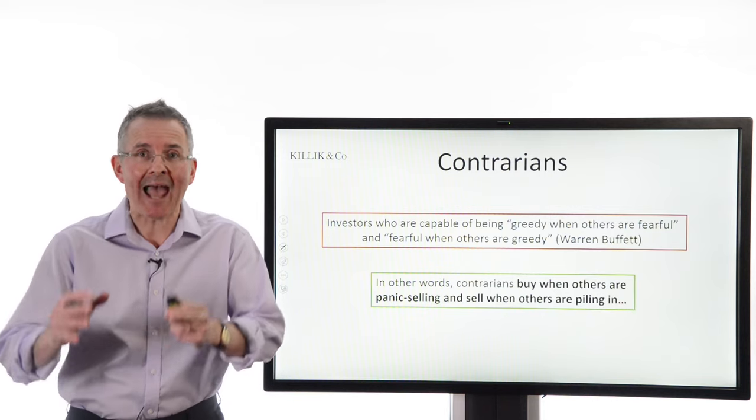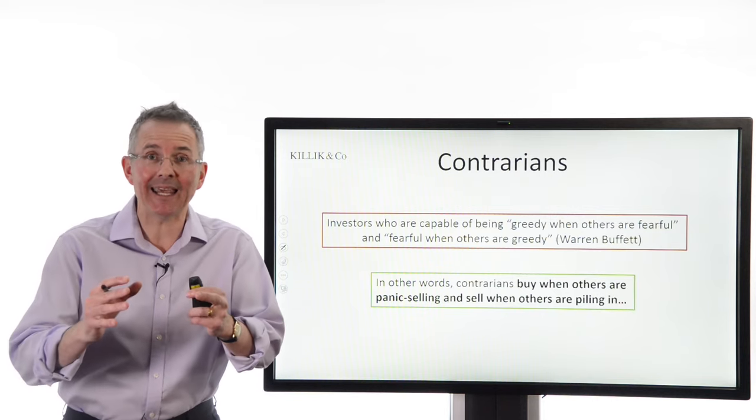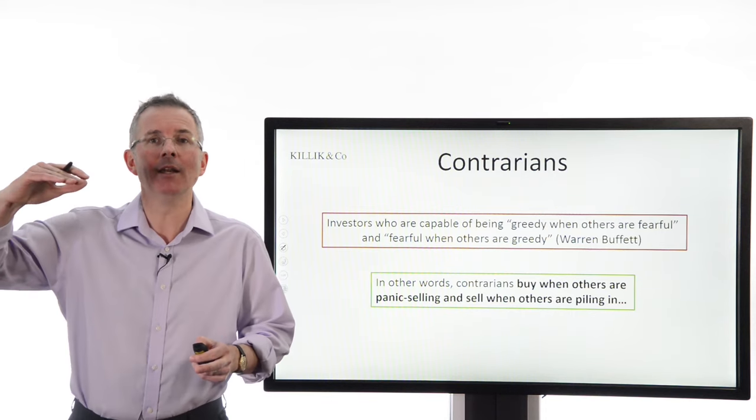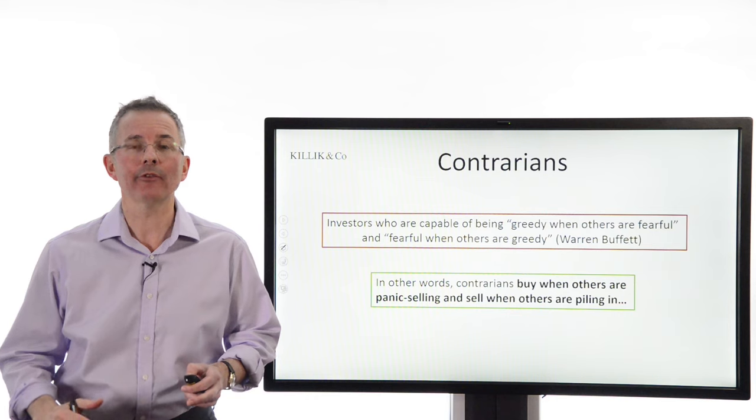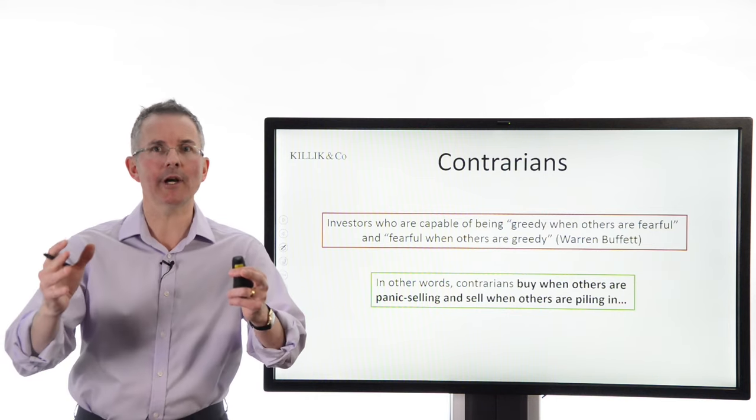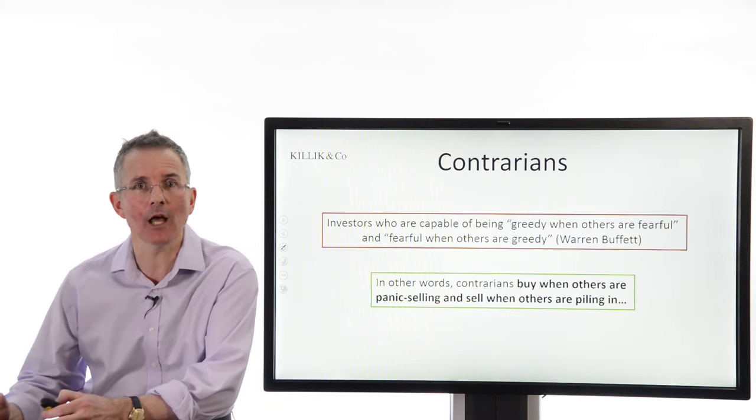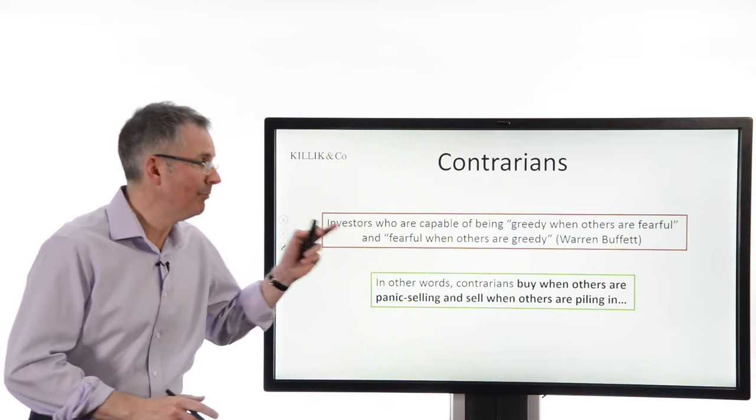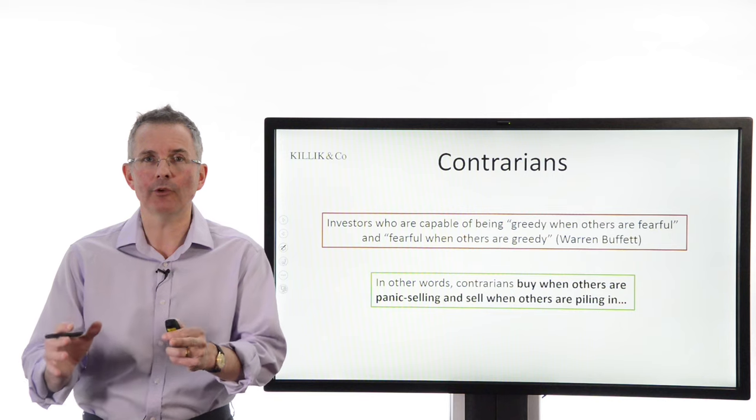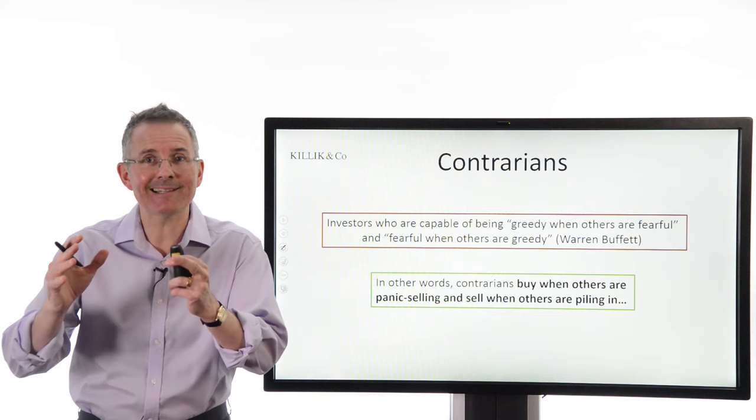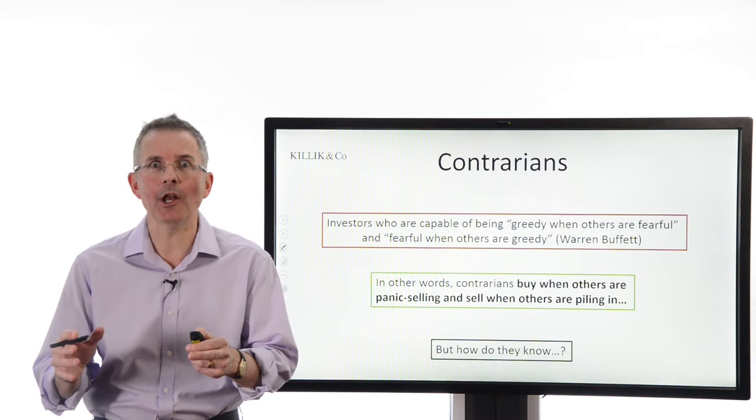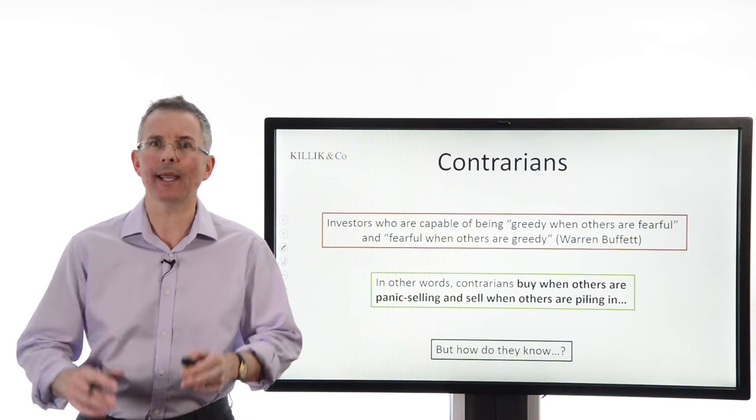In other words, you are somebody who can buy as others are selling and pick up a bargain, or sell when others are piling in and avoid the subsequent losses. Sounds simple, sounds like a great thing to do, because it means you will be buying low and selling high, which is the point of investing in a way. But actually, it's pretty difficult to do because it takes a certain person to be a contrarian, and the question is, how do they know when is the right moment to go against the crowd?